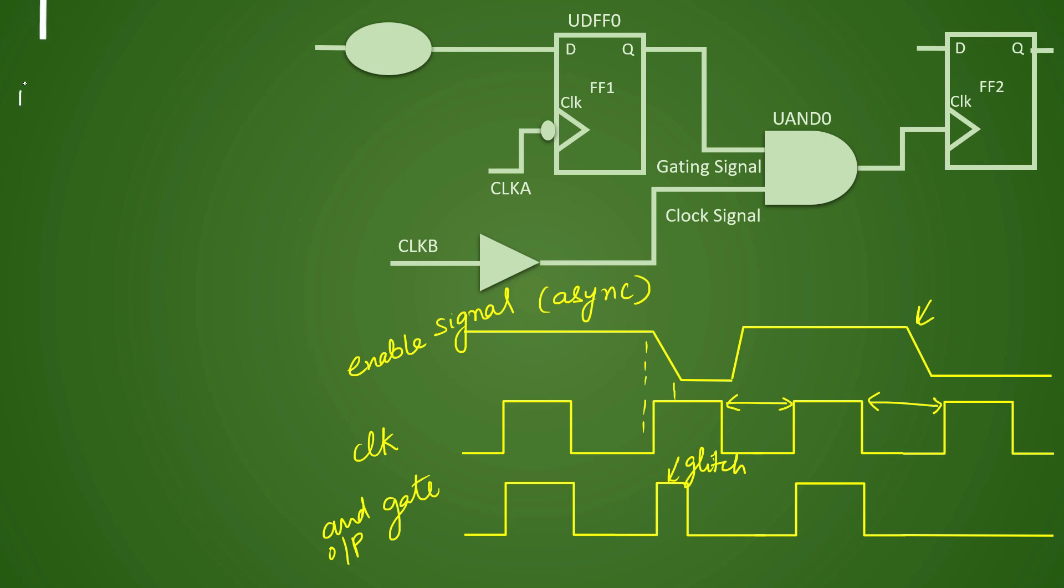Now let us quickly write down our learnings here. First learning is that gating signal should come from your sequential element. Sequential element means which is your latch or flip flop. So it should come from sequential element. That is your first learning which we did just now.